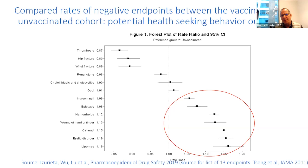One method was to compare the rates of negative endpoints between the vaccinated and unvaccinated cohorts. We used a set of 13 negative outcomes and saw how they aligned between the vaccinated and the unvaccinated. The outcomes more likely to be associated with the vaccinated cohort—highlighted with a red circle—include ingrown nail, epistaxis, hemorrhoids, wound of hand or finger, cataract, eyelid disorder, and lipomas. We defined them as potentially associated with health-seeking behaviors—that's why we consider we saw them more likely to be associated with vaccinated individuals.